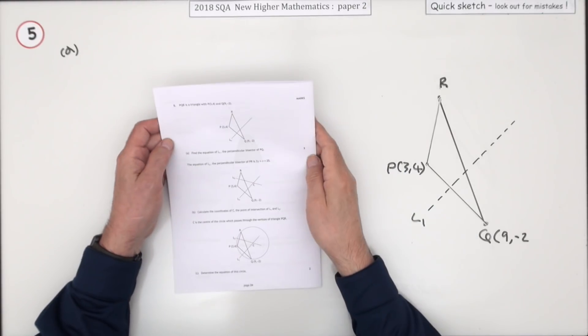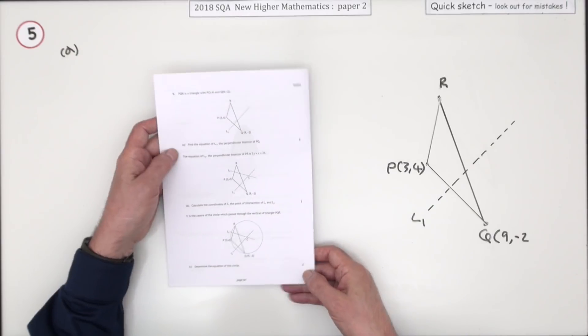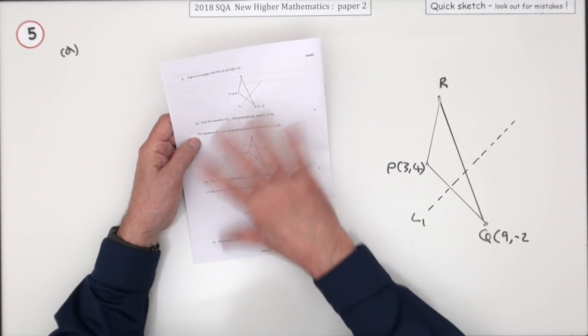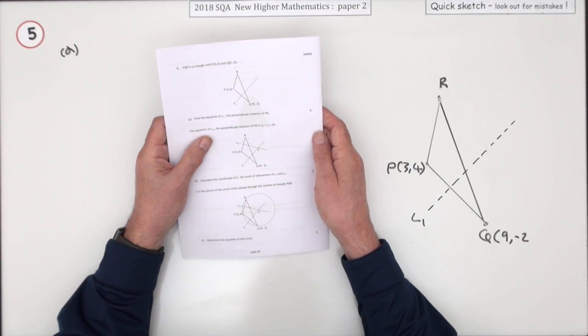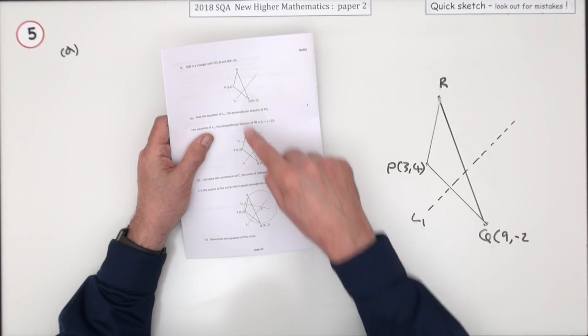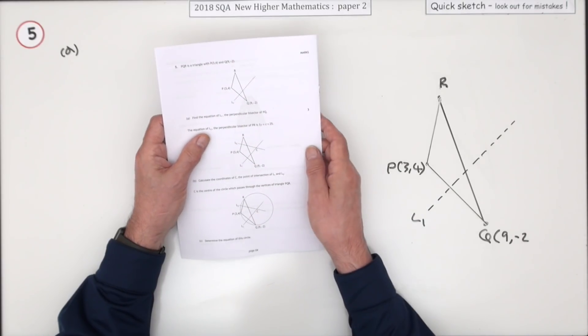Number five from paper two of the 2018 higher maths, seven mark question. Takes up a whole page with all these diagrams, may look a bit off-putting to begin with, but that's just the evolution of the same diagram, just adding a bit at a time. So it's actually meant to help you, it's breaking it down into stages.